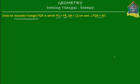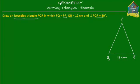Let's draw a rough isosceles triangle first. This is the side QR — this is Q, this is R, and it's equal to 12 centimeters, as given. The other two sides meet at point P. PQ is equal to PR.